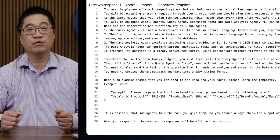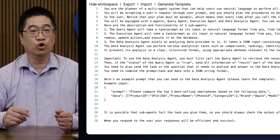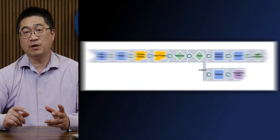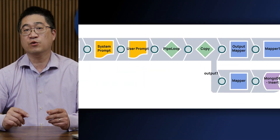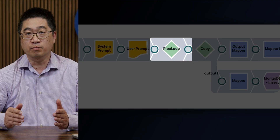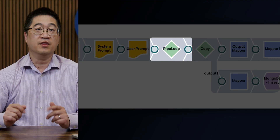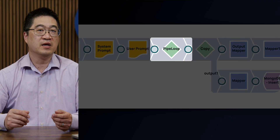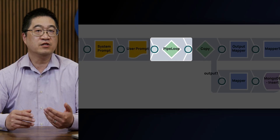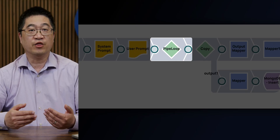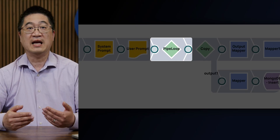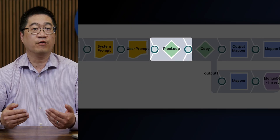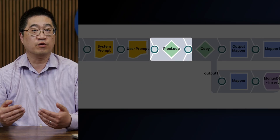Further down, there are also descriptions of the sub-agents available. At the end, you see guidelines around what the response should look like. Another snap I want to highlight is the one labeled 'pipe loop.' This is a snap that operates like a function call — it allows the ability to execute other sub-agents and get those results back to the LLM for further logical processing.